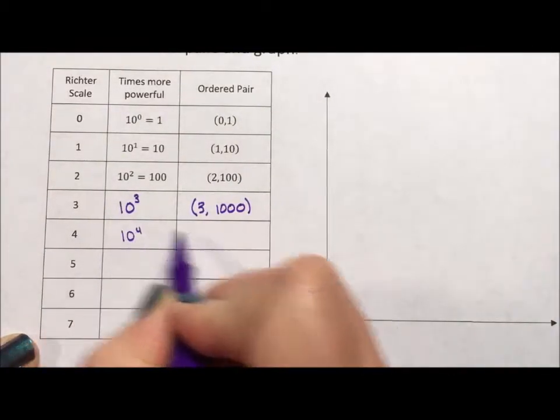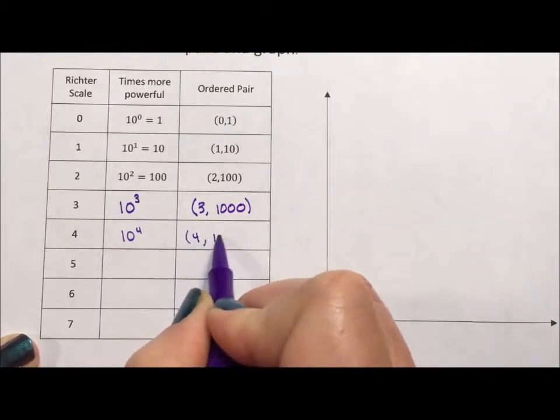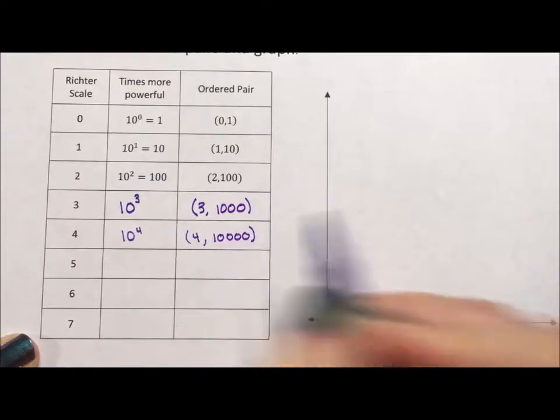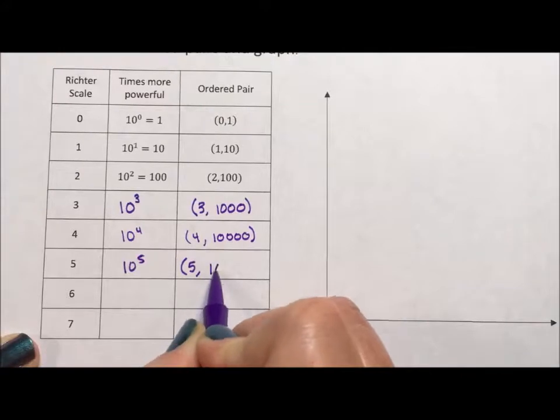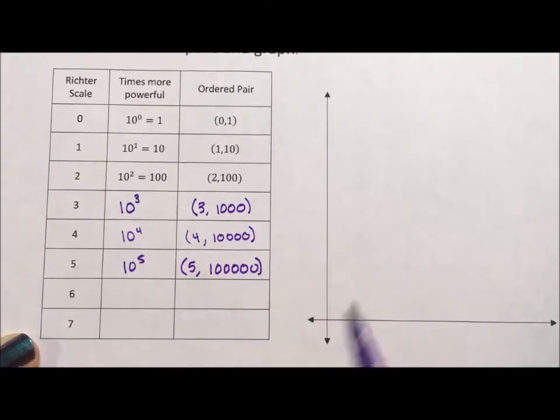And if it's a 4, it's 1, 2, 3, 4, 10,000. If it's a 5, 1, 2, 3, 4, 5, 100,000.